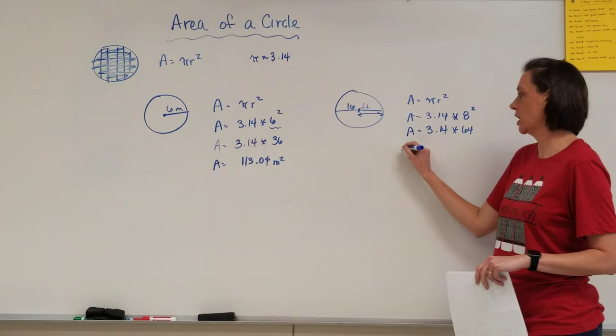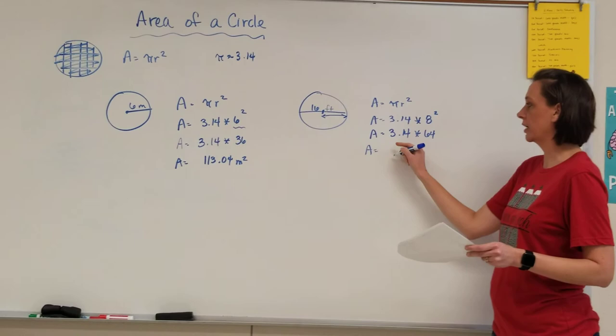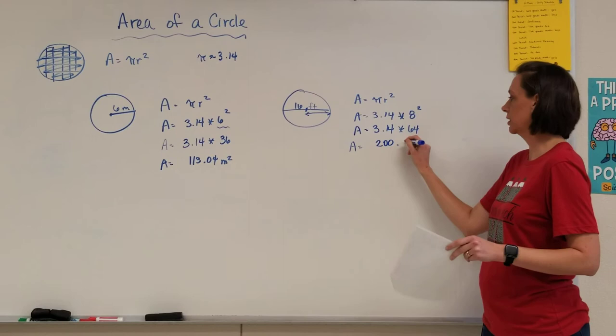Very, very important. So you might have some scratch paper to do all of your work. If we work out our 3.14 times 64, you would have 200.96 feet squared. That's great.